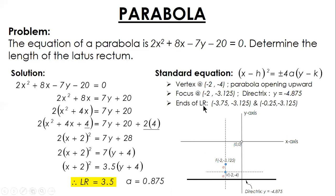And after this, the ends of the latus rectum: since it's 4a, on both sides 2a, 2a. 2 times a is 1.75. From the focus, minus 1.75 and plus. All three points have the same y-coordinate. Only the x changes: -2 minus 1.75, this one; -2 plus 1.75. Now you can trace the parabola.